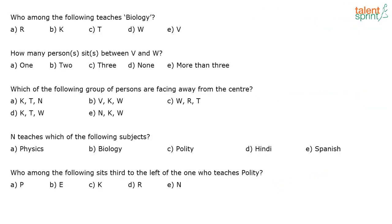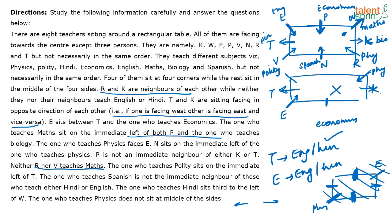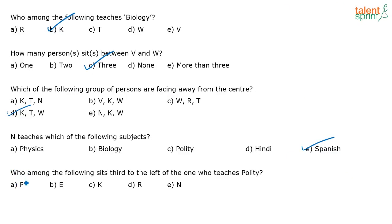Now let's look at the questions. Who among the following teaches biology? K teaches biology. How many persons sit between V and W? Three persons sit between V and W. Which group of persons are facing away from the center? K, T, and W are facing away from the center. N teaches which subject? N teaches Spanish. Who sits third to the left of the one who teaches polity? That is going to be P — correct.